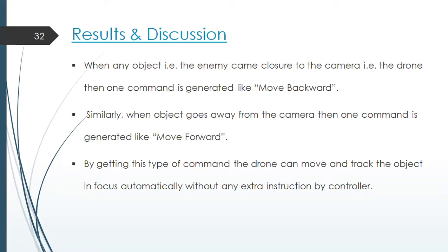Result and discussion. When any object that is the enemy came closer to the camera, that is the drone, then one command is generated like move backward. Similarly, when object goes away from the camera, then one command is generated like move forward. By getting this type of command, the drone can move and track the object in focus automatically without any extra instructions by controller.